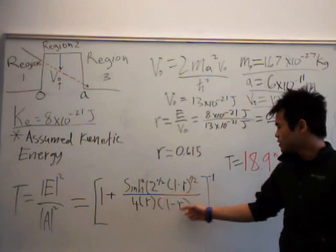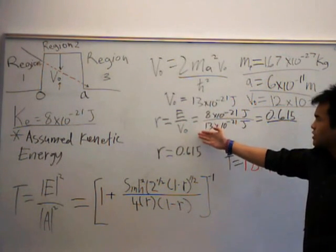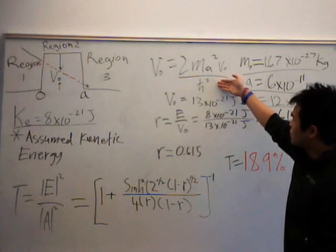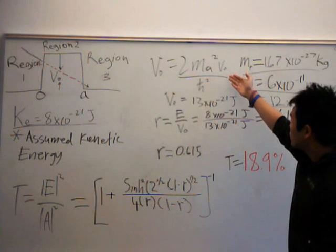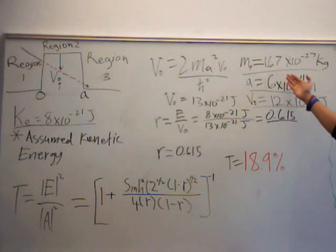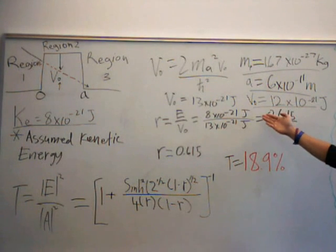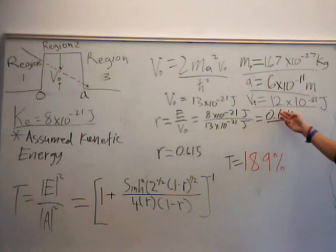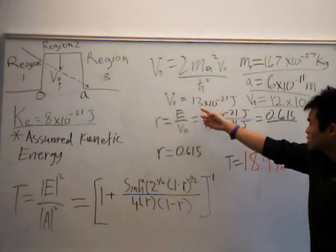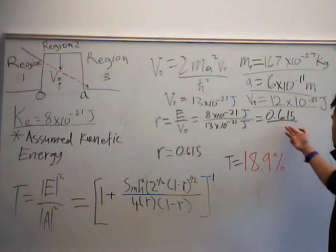To solve the value T, we need to determine R, which is E over V-naught. V-naught is the potential energy the particle experiences, shown here by 2 and A squared times V-naught over h-bar squared. The mass of the particle is 1.67 times 10 to the negative 27 kilograms. A is 6 times 10 to the negative 11 meters. V-naught, our potential energy of the well, is 12 times 10 to the negative 21 joules. With these values, we determine our V-naught to be 13 times 10 to the negative 21 joules, giving an R value of 0.615.